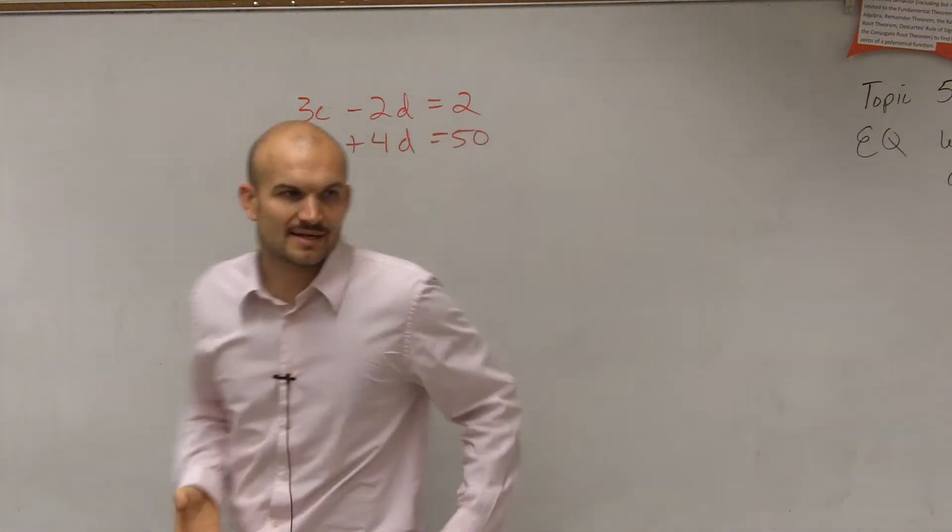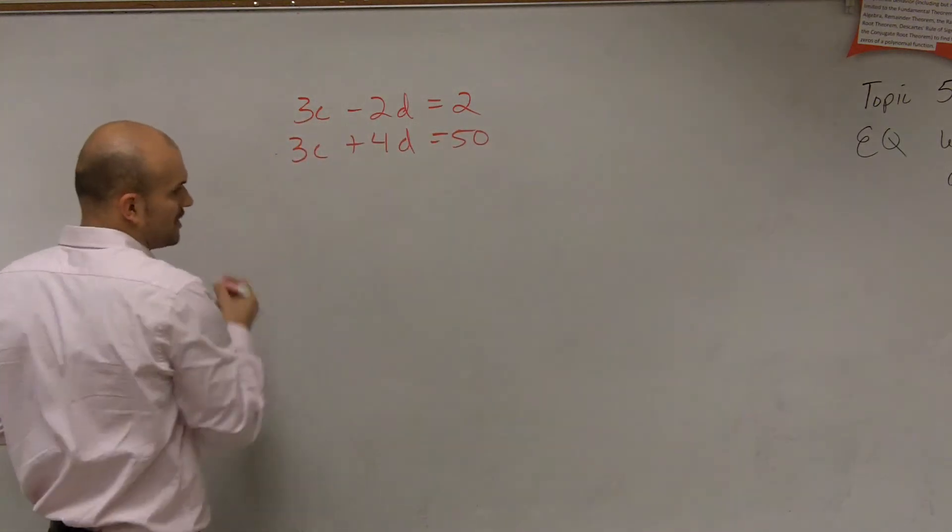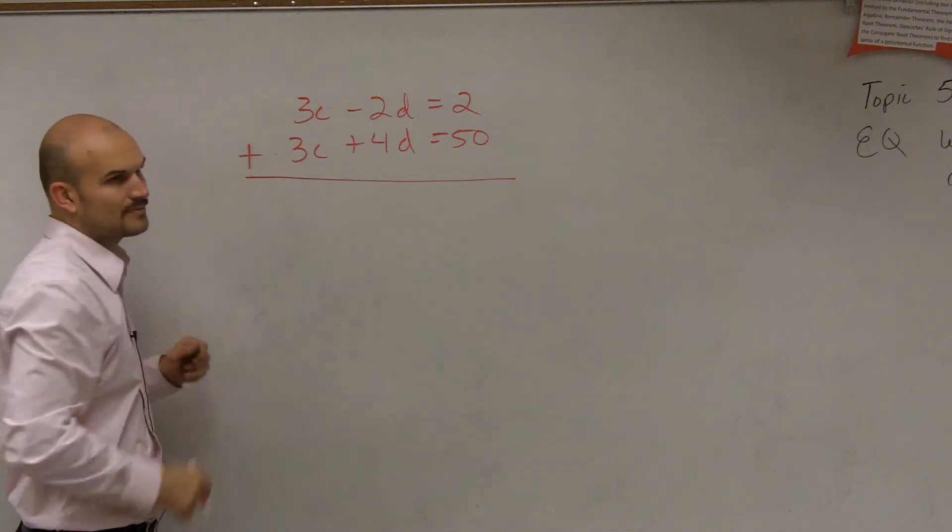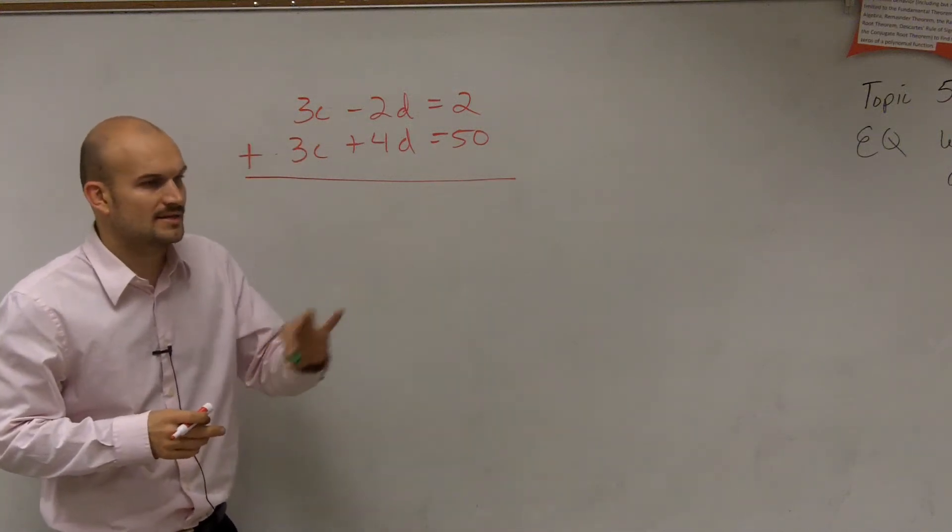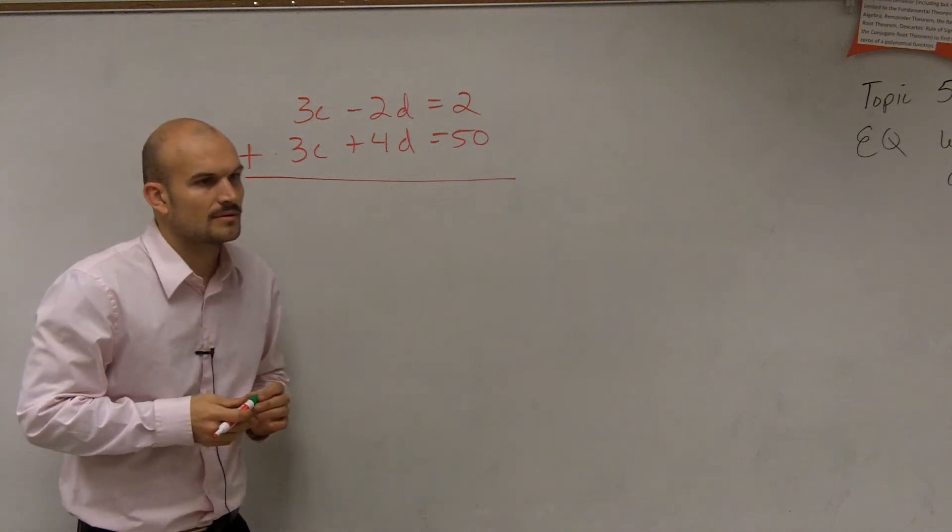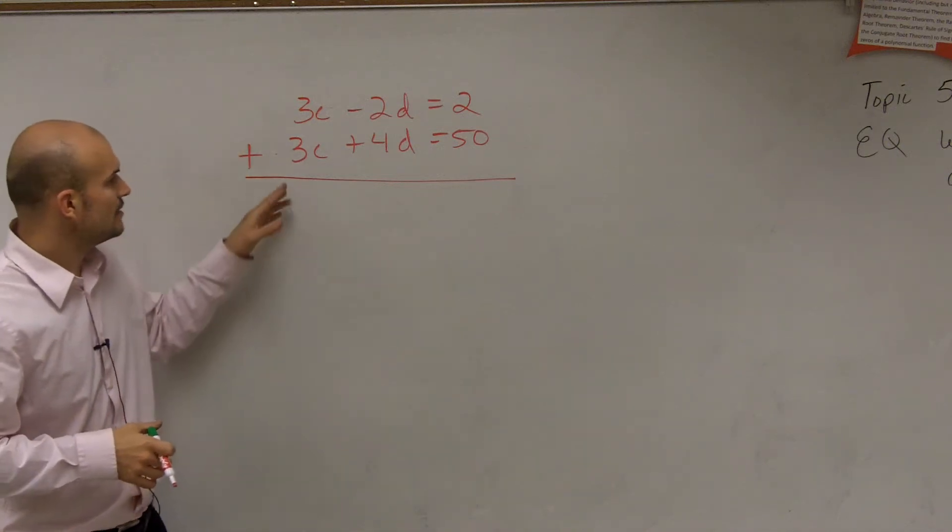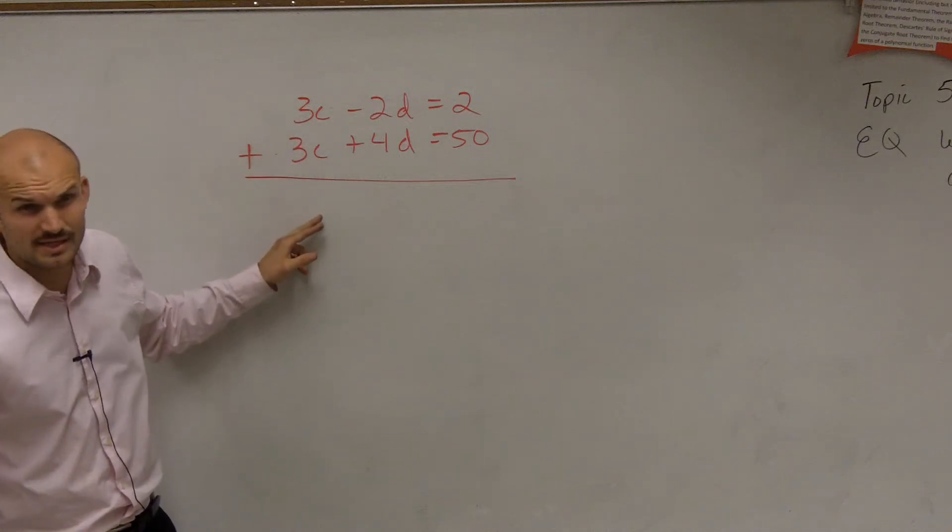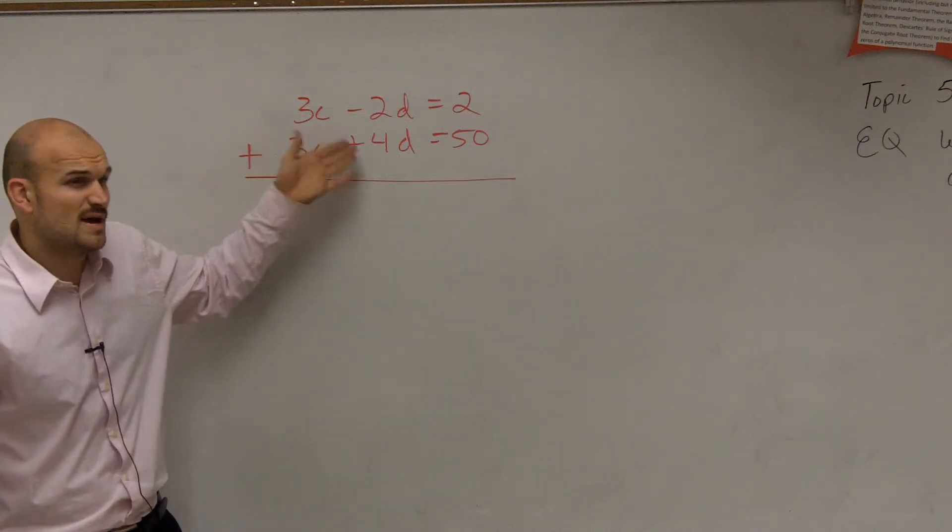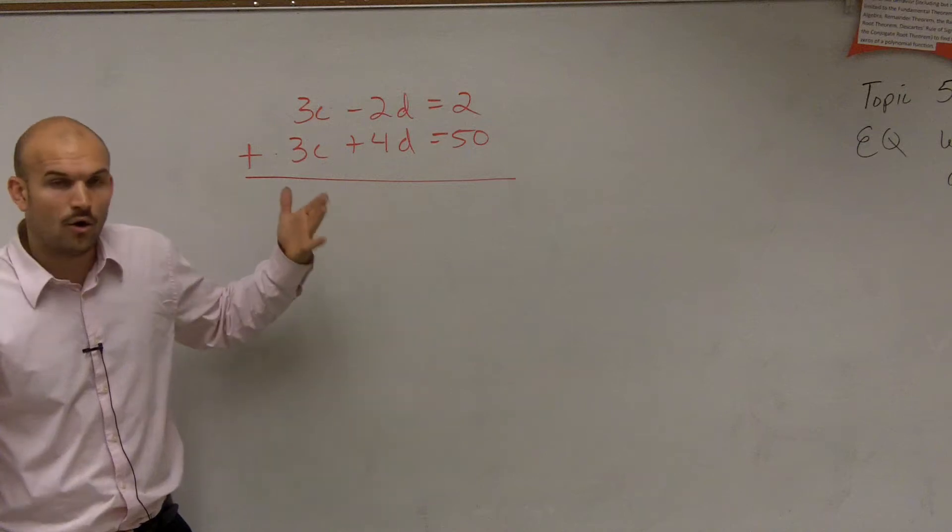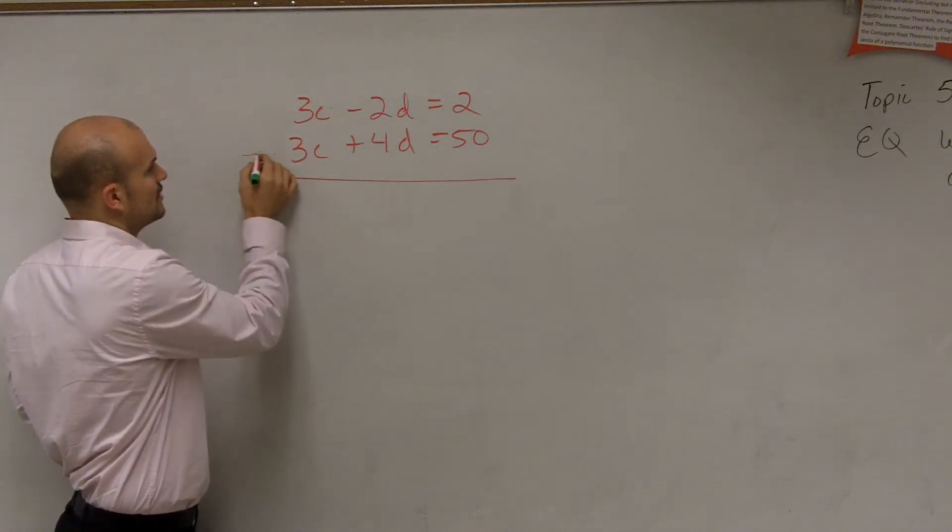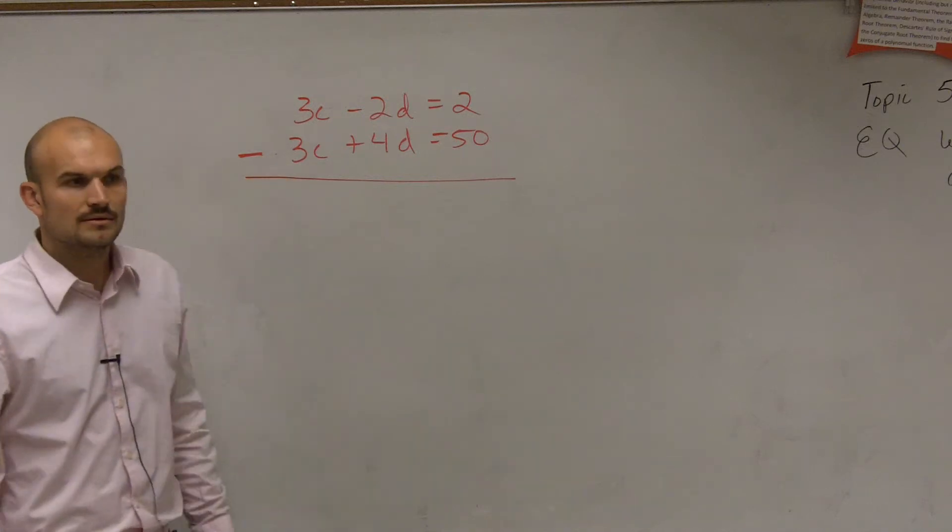So here's my thinking. If you were to go back through like we did last problem, and if you were to add them, remember the whole idea, if we were going to do that, if you added 3C plus 3C, are you going to get 0C? Are you going to eliminate it? No, you have to make one of those negative. Or rather than making one of them negative, could we also just subtract the equations? Yeah.